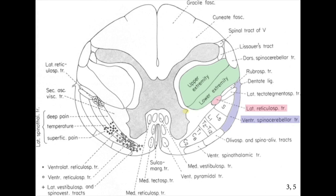The most important adjacent structure is the reticulospinal tract, found anteromedially to the spinothalamic tract. Damage here can result in sleep apnea and Ondine's curse. This can also occur as the result of reticulospinal tract lesioning in the setting of impaired pulmonary function, or if the only functioning lung is on the side being lesioned.